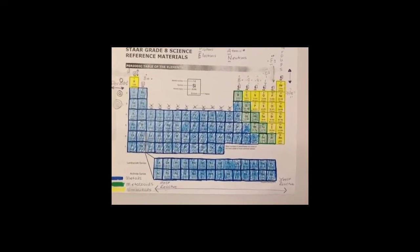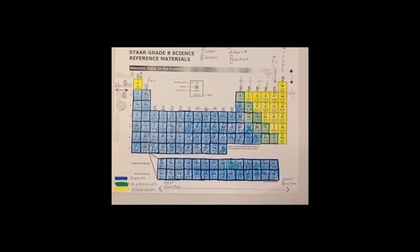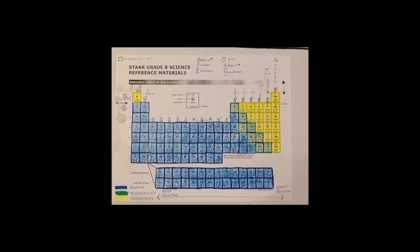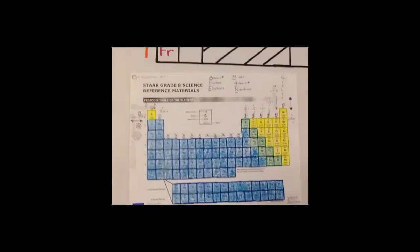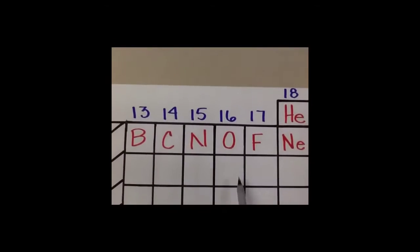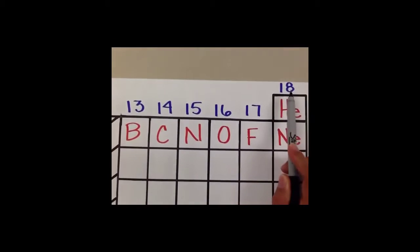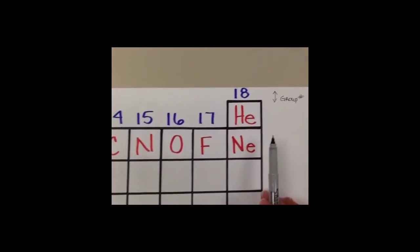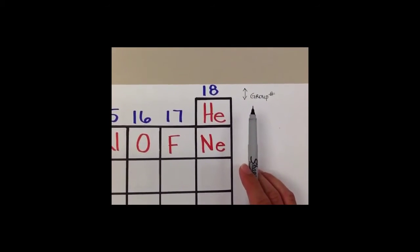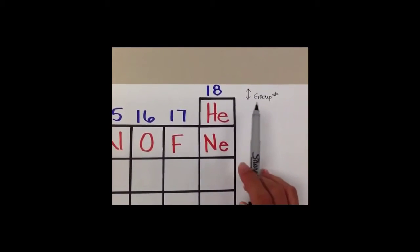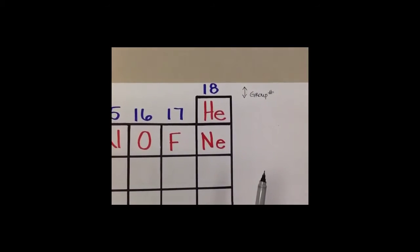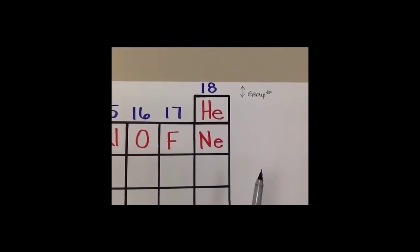Group numbers are the numbers at the top. These group numbers go vertical — they go up and down. I would draw an arrow showing the group numbers go up and down. So when we talk about groups or families, this is what we're talking about.